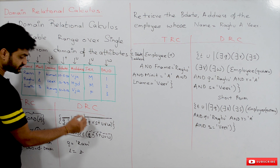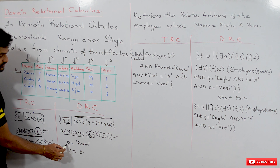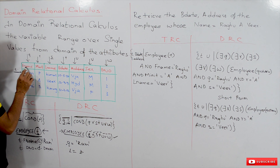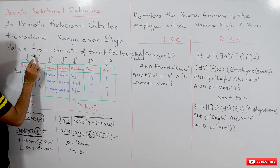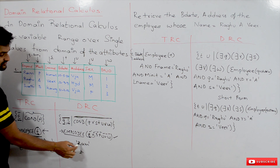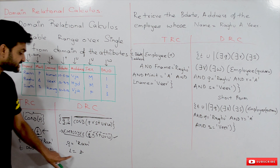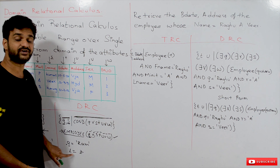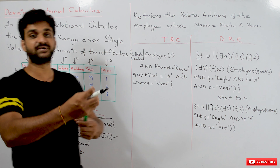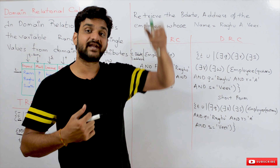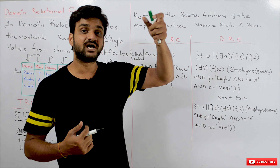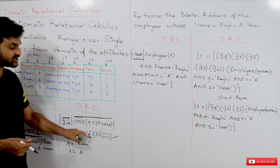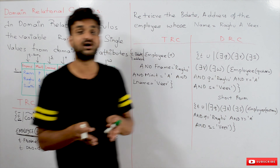Another condition is 'q = RAM' — q is assigned to fname, so wherever q equals RAM it means fname equals RAM. Similarly, 'l = z' means the value in a tuple of that attribute should be equal to z. In tuple relational calculus we use only one variable per tuple, whereas in domain relational calculus variables are assigned per domain. These are the different types of formulas used in the condition part of domain relational calculus.